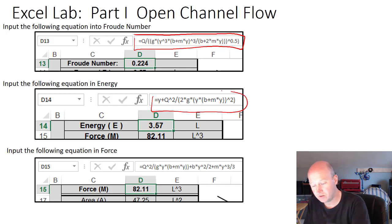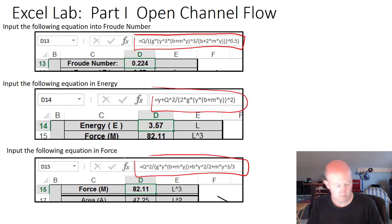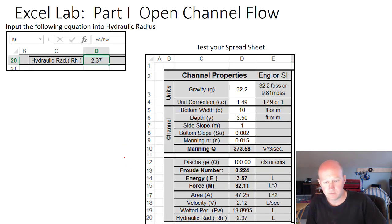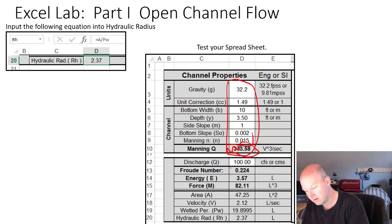And also for the energy equation and specific force. Area is a little bit easier, and velocity, wetted perimeter—put all those equations in and hydraulic radius. You should get a spreadsheet that has the same numbers if you put these values in. It should spit out the same numbers.